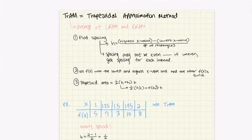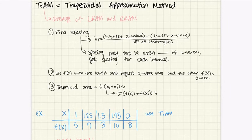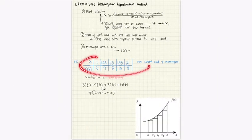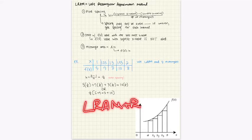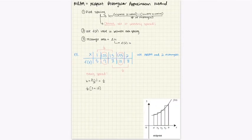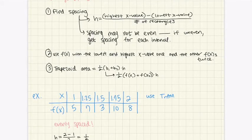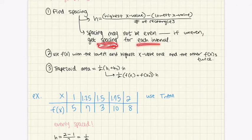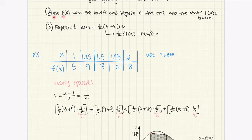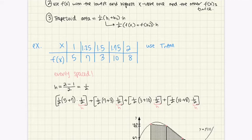Moving on to the last method: TRAM, the Trapezoidal Approximation Method. This is actually an average of LRAM and RRAM — if you calculate LRAM and RRAM and divide by two, you get TRAM. First, find the spacing as before; the spacing does not need to be even. If it's unevenly spaced, you calculate spacing for each interval. The second step is to use the f(x) values at the highest and lowest x values once, and all other x values twice.